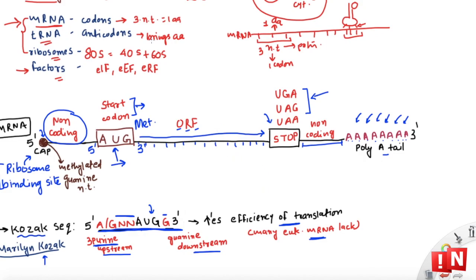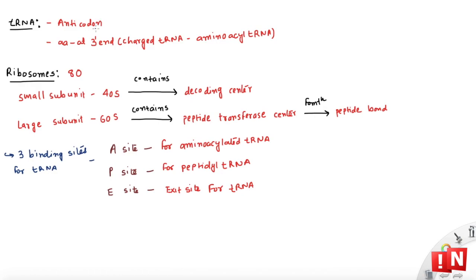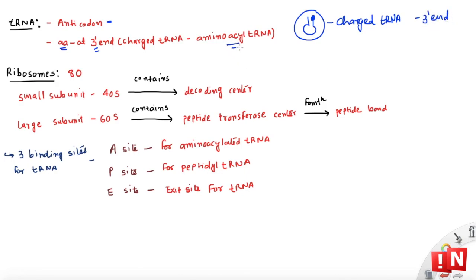Now let's look at tRNA and ribosomes. The tRNA has the anticodon and brings in the correct amino acid. Amino acids are attached at the 3' end of the tRNA. tRNAs that have amino acids attached are called charged tRNAs or aminoacyl tRNAs — they bring in the amino acid based on the anticodon matching the codon on mRNA.